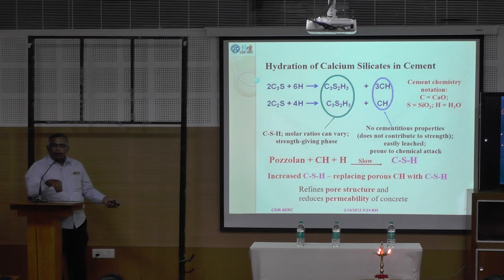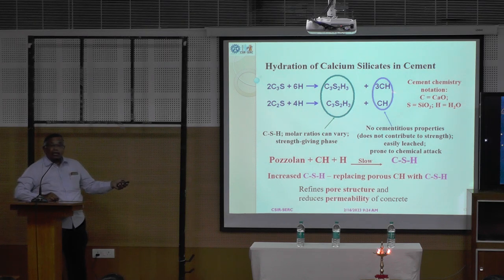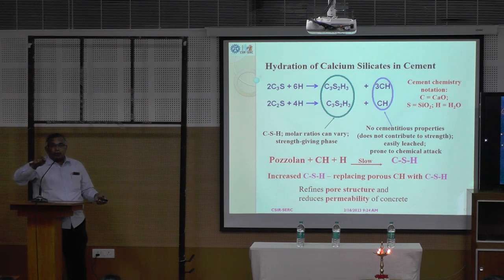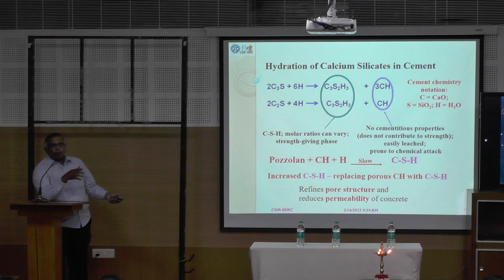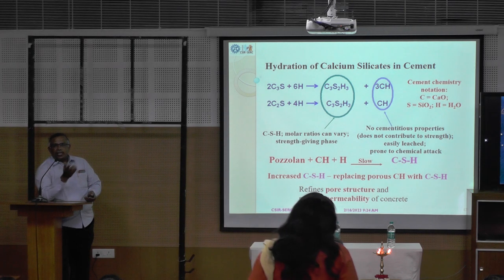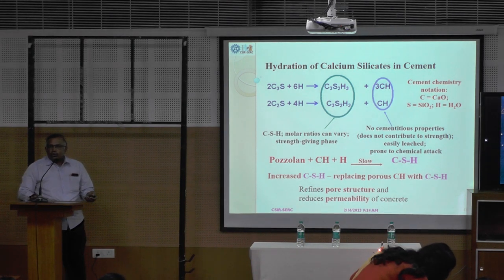Chloride or oxygen, fluoride or water or carbon dioxide — these things increase because of the porous nature, because of this calcium hydroxide. If you are eradicating, if you are replacing this calcium hydroxide by using a supplementary material, then we may get good concrete, ultimately good concrete. That is what reduces the permeability of concrete. Concrete permeability is very high; that can be reduced. We will get a good concrete.